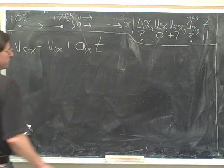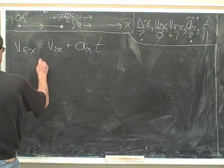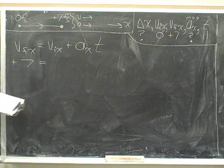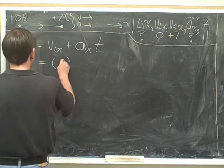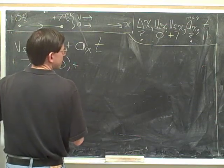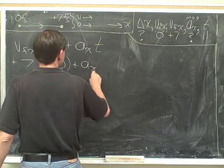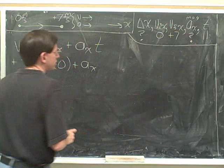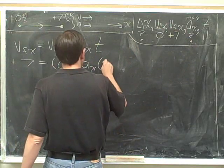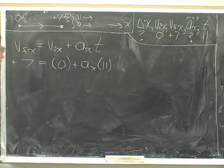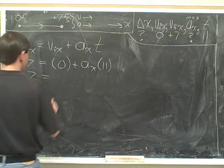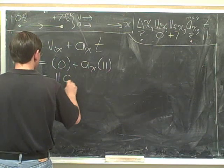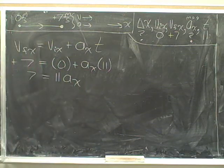Now, we plug in for V final x. We certainly do not plug in 7. That would be ridiculous. We plug in positive 7. For the initial velocity, we use parentheses and plug in our 0. Now, the acceleration we leave as a variable because that's the question that we're trying to answer. And the time is 11. You can use parentheses to indicate multiplication. All right. Now, simplifying, we have 7 equals 11 times a sub x.